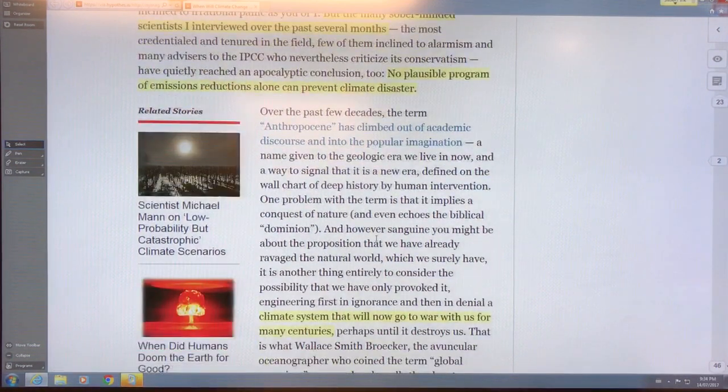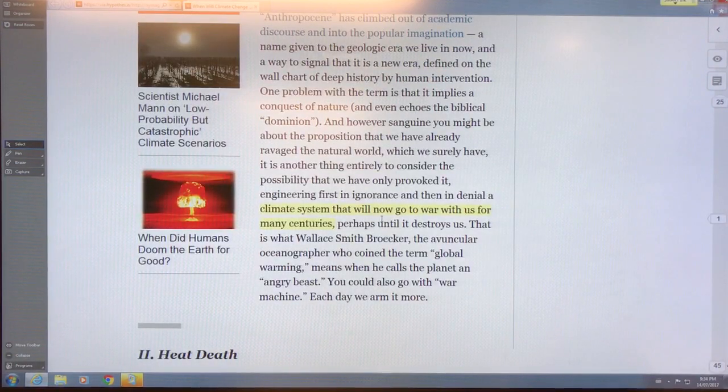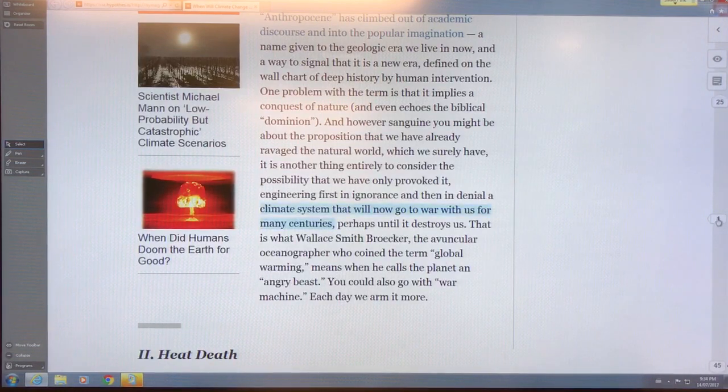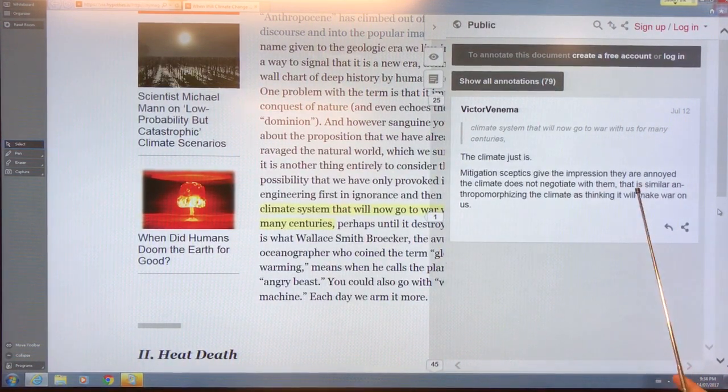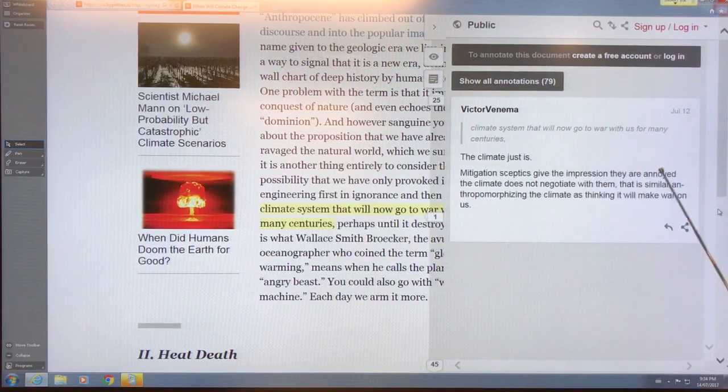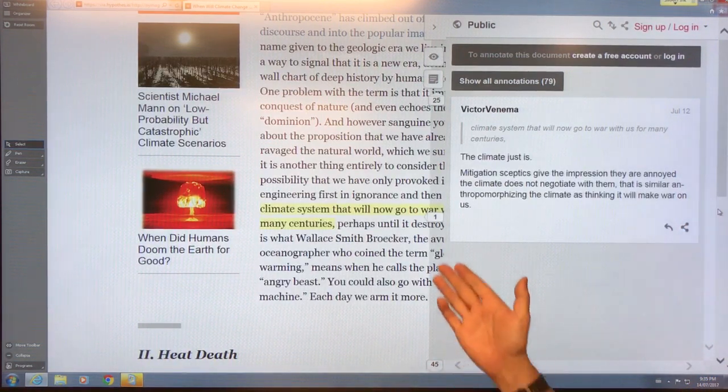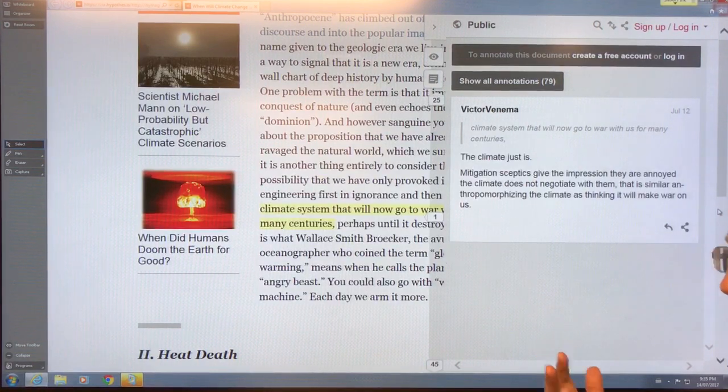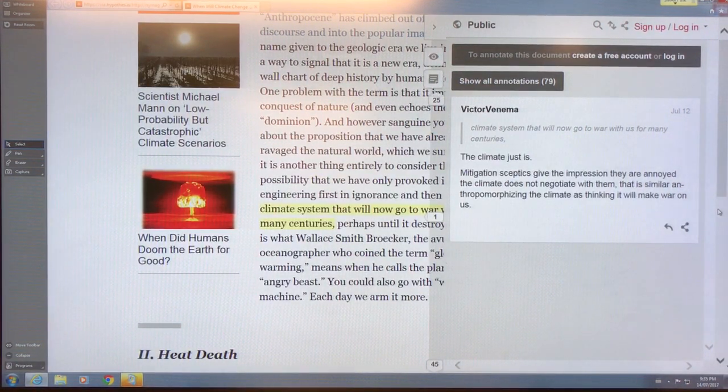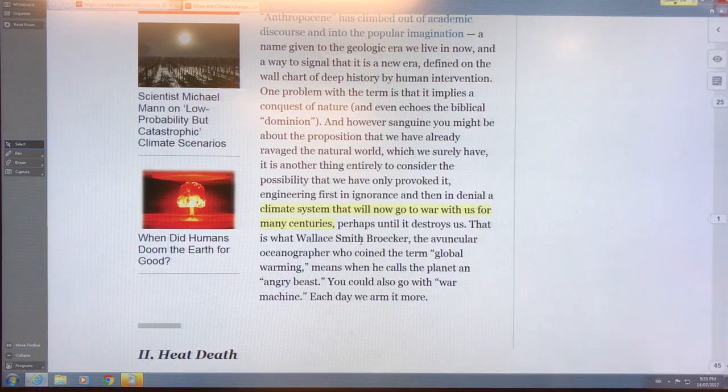The term anthropocene has popped out. What's the comment here? 'The climate system that will now go to war with us for many centuries.' The comment says the climate just is. To say that the climate is annoyed with us and will go to war against us, those are just ways of understanding. Wally Broecker said we've awoken an angry beast. He's famous for saying this. This is one of the ways that people understand things and it sinks in better. We talk about the war against drugs. What does that mean? Drugs aren't fighting us, they're not at war against us. These metaphors are used all the time. The climate is going to give us grief for years.